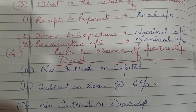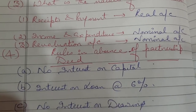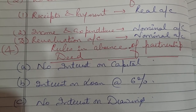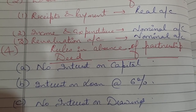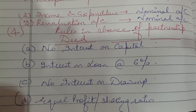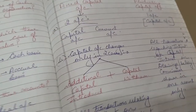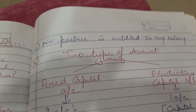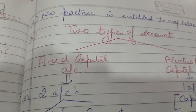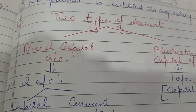Very important question: what are the rules in the absence of a partnership deed? There will be no interest on capital, no interest on drawings, interest on loan will be at the rate of 6%, profit sharing ratio will be equal, and no partner will be entitled to any salary.